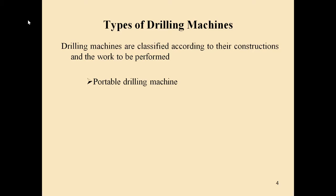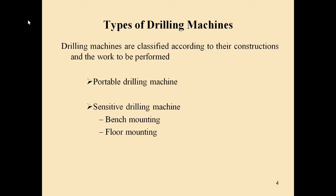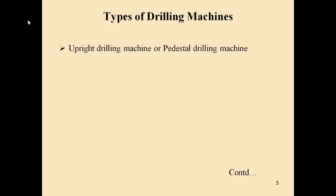The first type is the portable drilling machine. The second type is the sensitive drilling machine, which has two sub-types: the bench-type sensitive drilling machine and the floor-type sensitive drilling machine. The third type is the radial drilling machine.